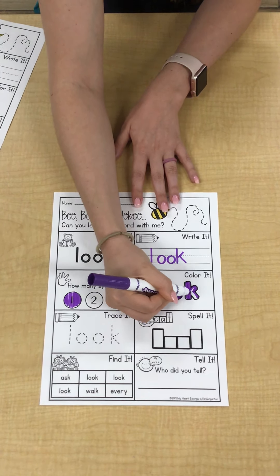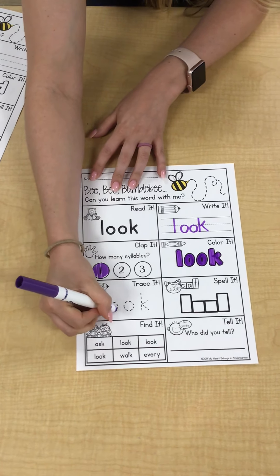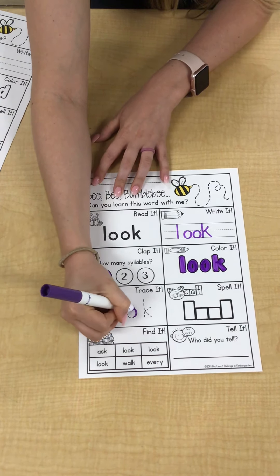The next thing it says is write it. We're going to write the word look, and it is spelled L-O-O-K. Look. I wrote my word look.